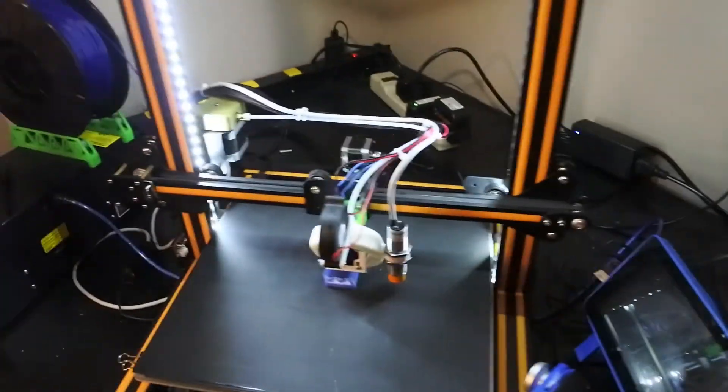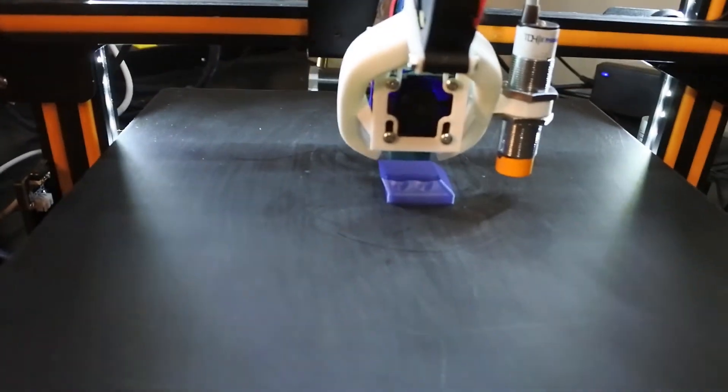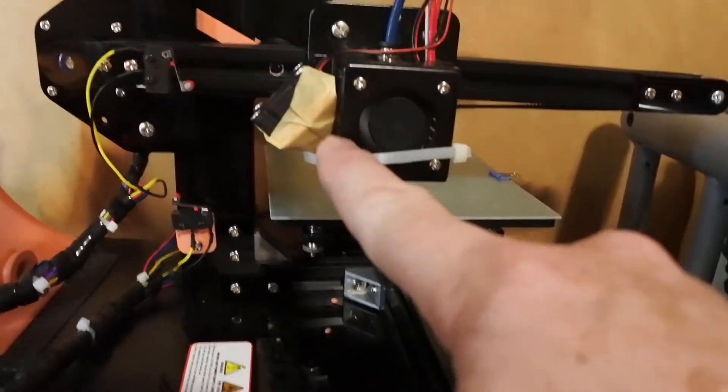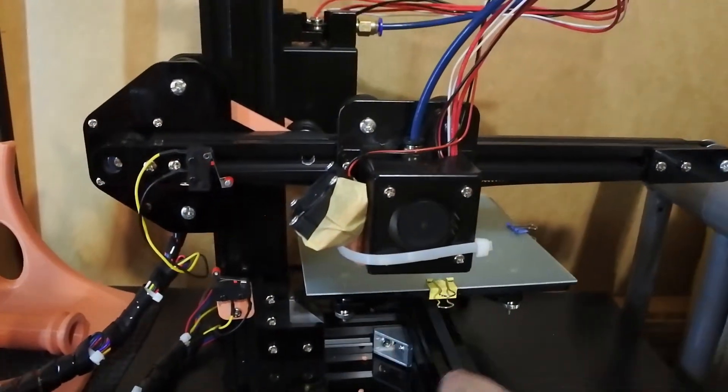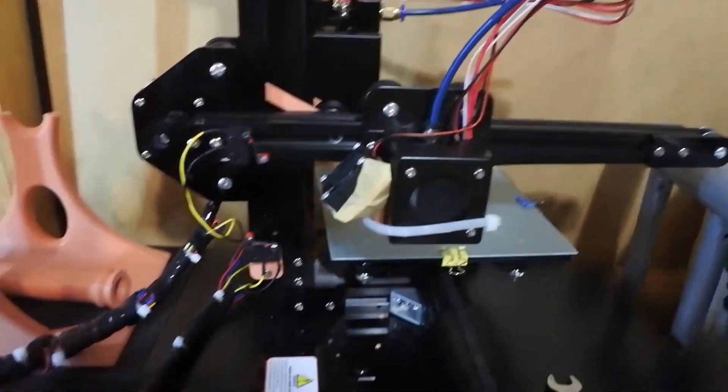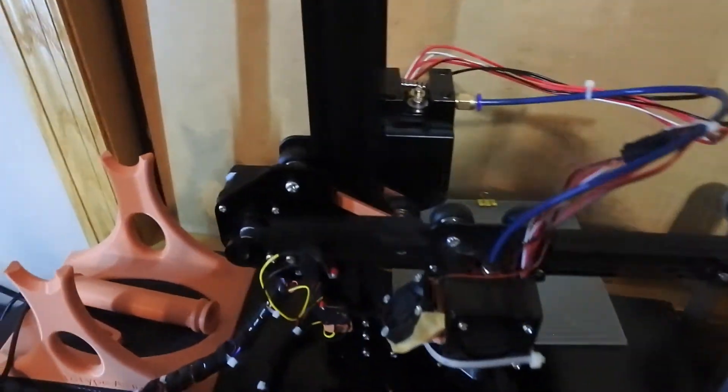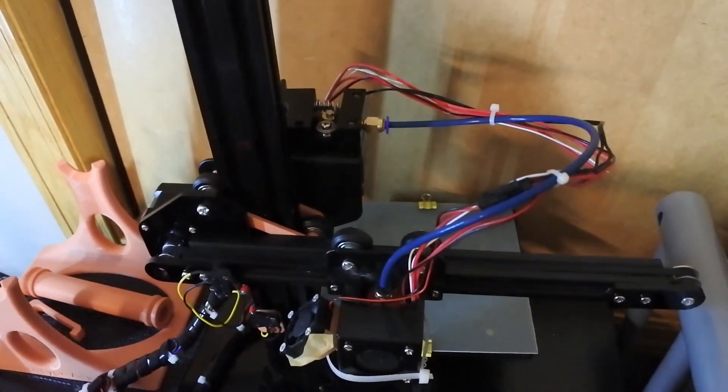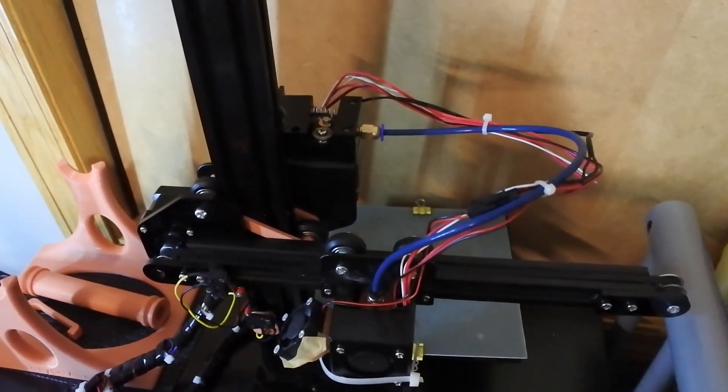So, anywho, yeah, this is printing another shroud or a little fan dock that I broke on the Tronxy so I can get this one fixed up again. But anyways, I'll do another video on that. So anyways, there you go. Bowden tube. We'll see how it prints and I'll let you know. Have a good day. Thank you.